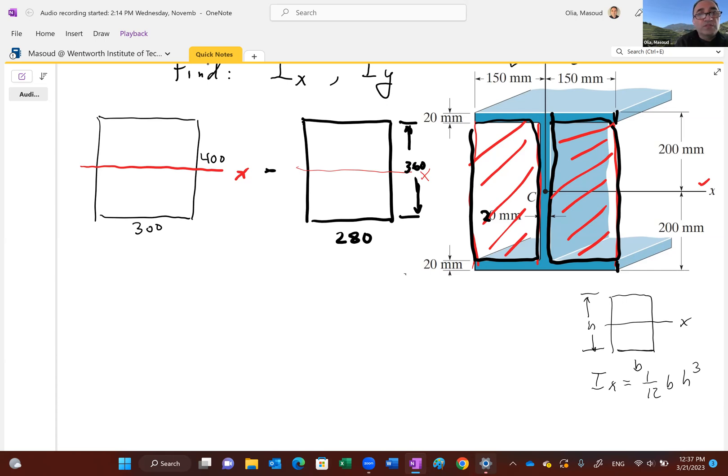In any case, so why don't we do this? I with respect to x-axis for this guy is 1/12, b is 300, and I'm going to leave the units in millimeters, and the h is 400³ minus 1/12. Remember, you took this 20 out, so it became a 280. Now the b is 280, and the h is 360 cubed. So that's the quickest way that you can calculate your I sub x.